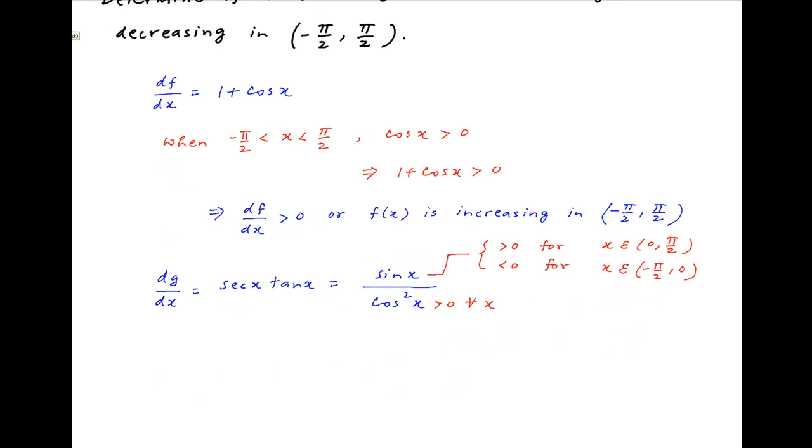Therefore dg/dx is negative when x lies in the interval minus π/2 to 0, and is positive when x lies in the interval 0 to π/2.